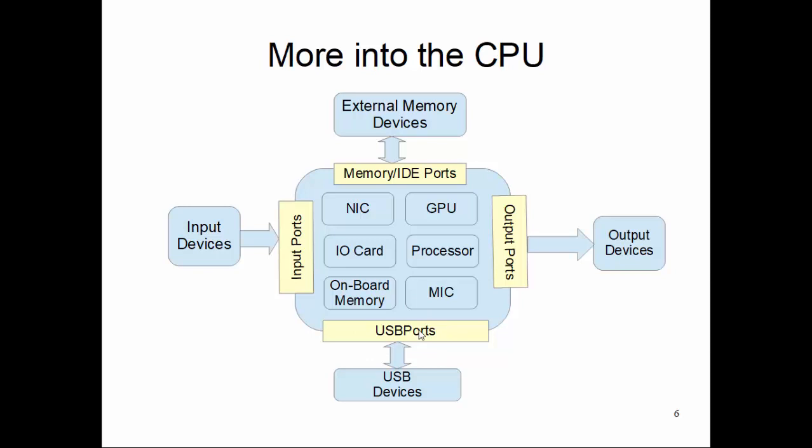This USB technology actually helped computing systems attach more and more devices without changing much to the CPU. A CPU can provide maybe two, three, or four USB ports, and you can attach many devices. There are USB extenders available where you plug one into a CPU's USB port and it suddenly becomes eight USB ports. You can even plug another extender into that first level extender and increase the number of USB ports as much as you want.